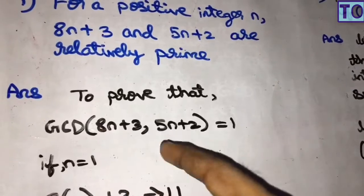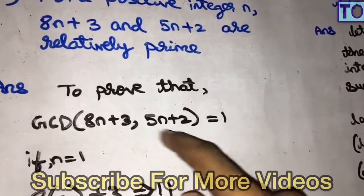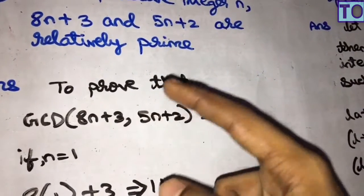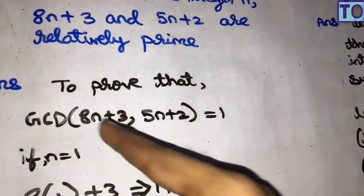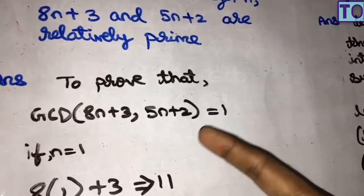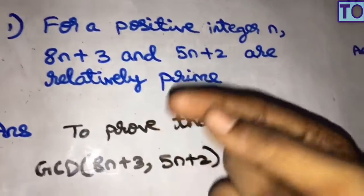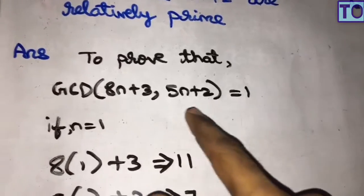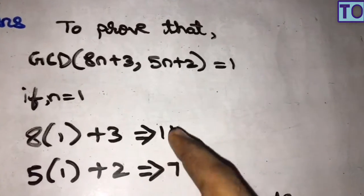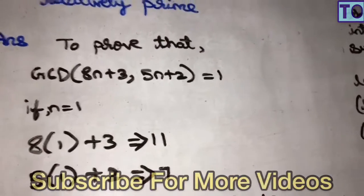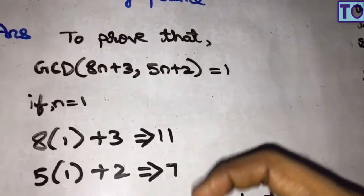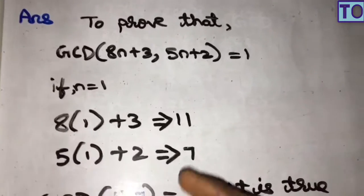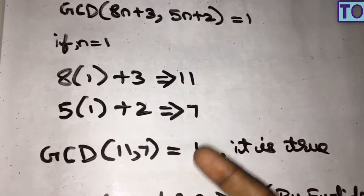How do we show this? First, let's substitute n equals 1. Then 8(1)+3 equals 11, and 5(1)+2 equals 7. We check: gcd(11, 7) equals 1. These are relatively prime, which is true.